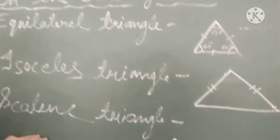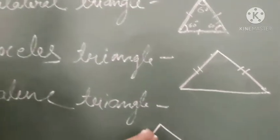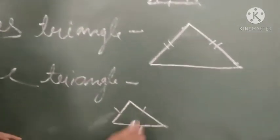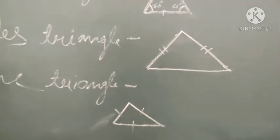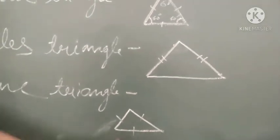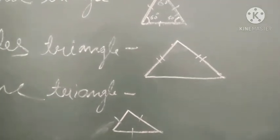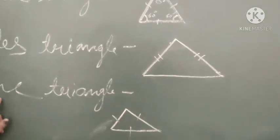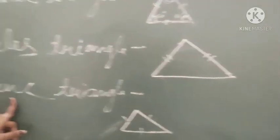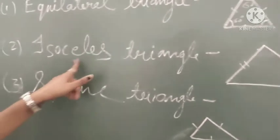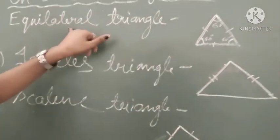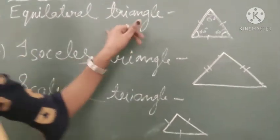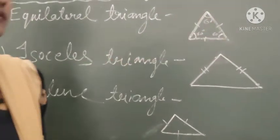The sum of angles is 180 degrees. Now, a scalene triangle is one where no sides are equal — none of the sides are the same. In an isosceles triangle, 2 sides are equal, and in an equilateral triangle, all 3 sides are equal.